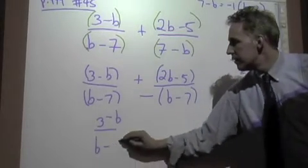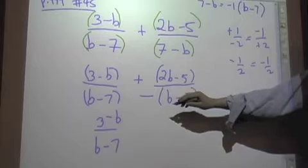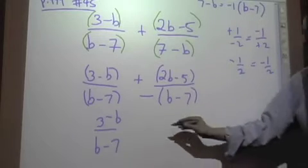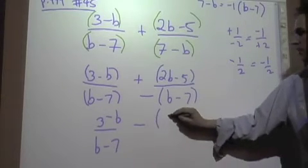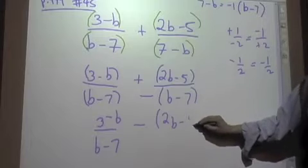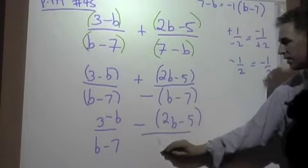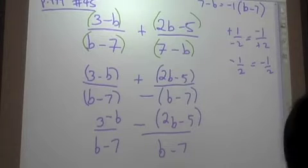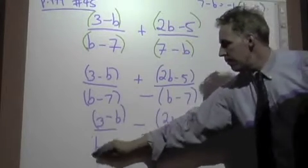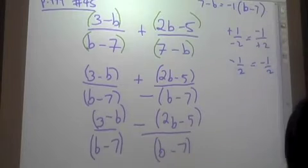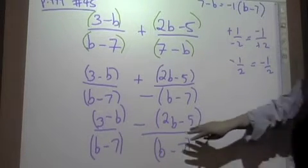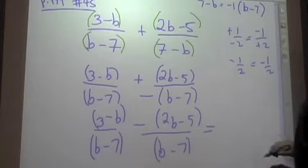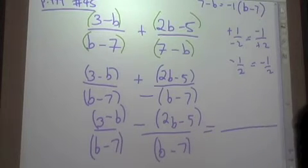All right. 3 minus b over b minus 7. All right. Now, this is now what, Catherine? A positive and a negative is a? Negative. Right. So, we've got 2b minus 5 over b minus 7. And look what we've got. We've got what we wanted. We've got our b minus 7. And this problem now becomes relatively simple because we're back to section 10-4. Remember? What we had like denominators? The same denominator? So, what's our denominator? B minus 7. B minus 7.